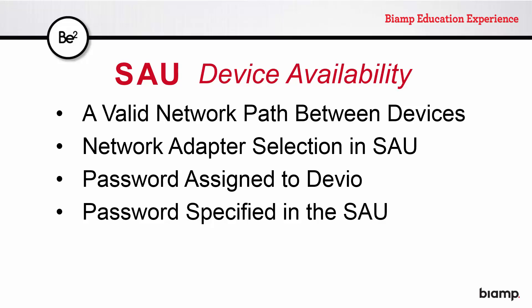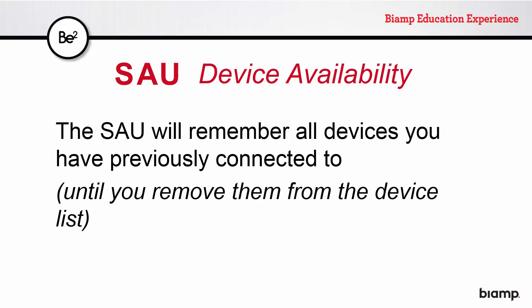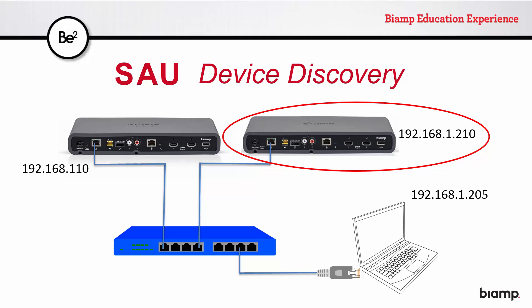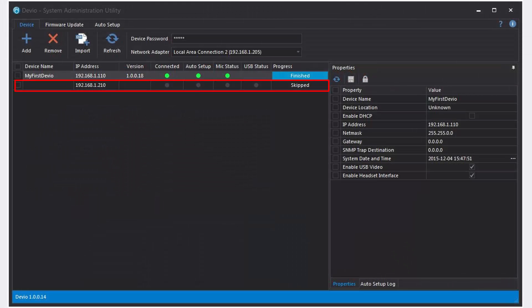There's one final reason why a device may appear as grayed out, and it's not strictly related to the device discovery process, but rather to the SAU. Namely, an instance of the SAU will remember any device you have previously connected to until you remove it from the device list. For example, in the Devio network we were just working on, if I were to permanently relocate a device, making it inaccessible to this computer, the next time I performed a device discovery on this network, my SAU would show a device at that IP address as remembered, but physically removed from the network. Use the SAU's remove button to delete it from the device list.